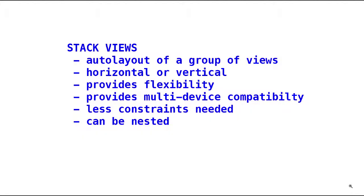A stack view is a container view in Xcode that can contain other views such as images, buttons, labels, and text fields, and will arrange those in either a horizontal row, which is a horizontal stack view, or a vertical stack view, which puts them in a column.